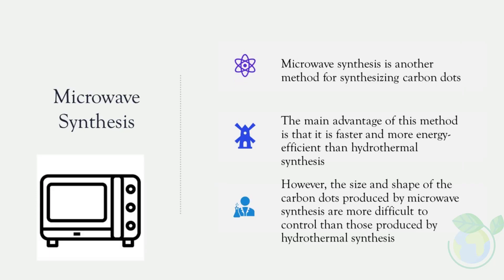Microwave synthesis is another method for synthesizing carbon dots. It involves heating a precursor material in a microwave oven, which leads to the formation of carbon dots through the decomposition of the precursor material. The main advantage of this method is that it is faster and more energy-efficient than hydrothermal synthesis. However, the size and shape of the carbon dots produced by microwave synthesis are more difficult to control than those produced by hydrothermal synthesis.